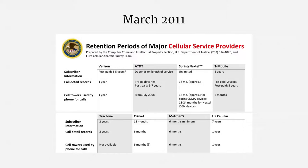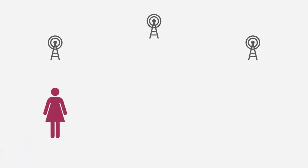This table comes from a March 2011 report prepared by federal prosecutors and investigators. As you can see, the phone companies greatly differ in their retention practices. That was the very simplified version of cell site location information, where Alice's phone connected to just one tower.